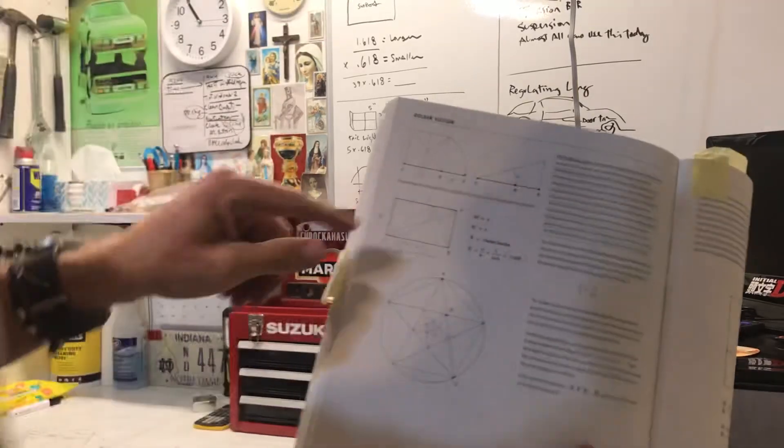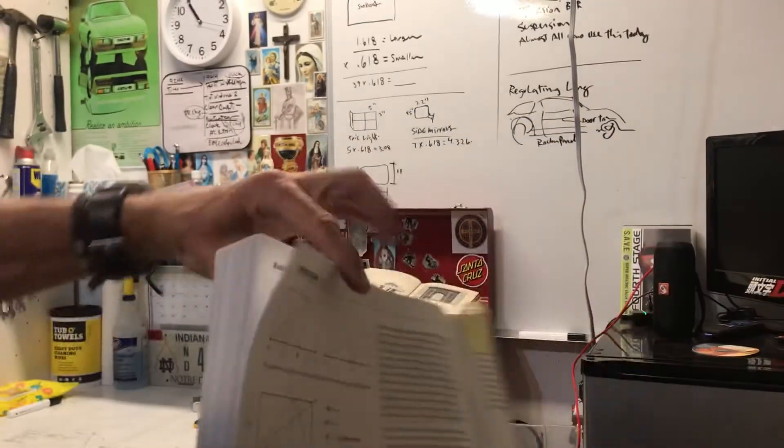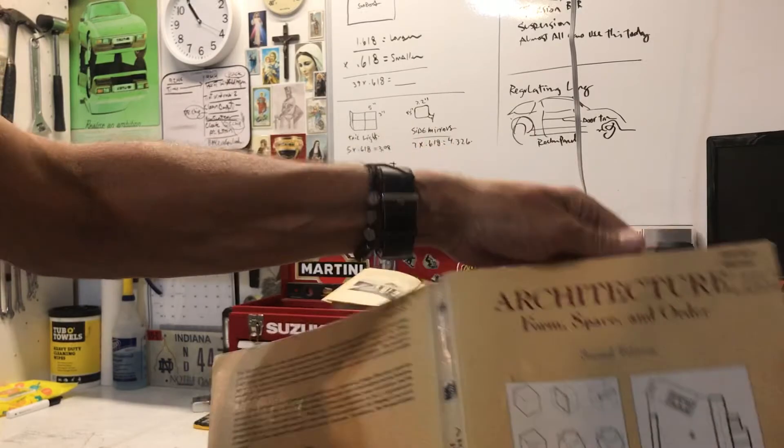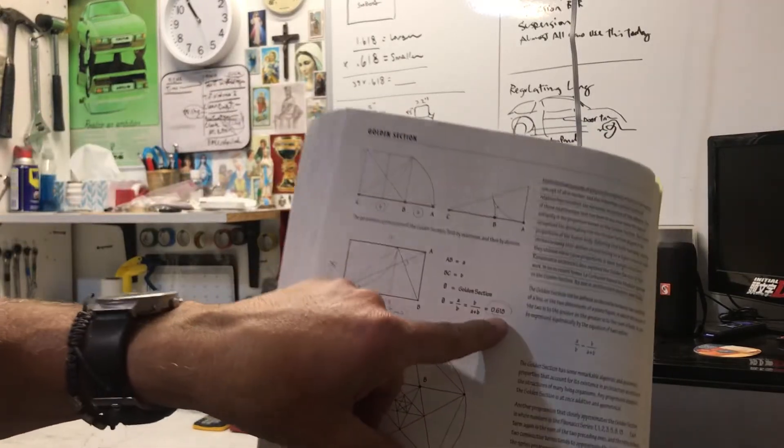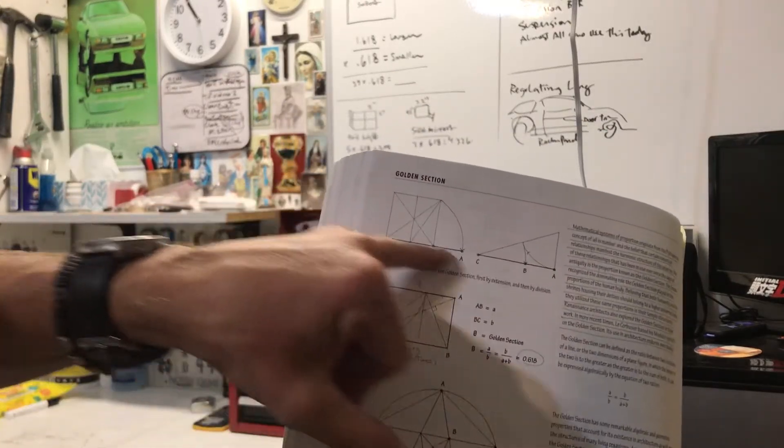And I'll show you it right here. You can actually see a golden section. This is a design book that I use sometimes in my classes, Architecture, Form, Space, in order from Francis Ching, one of the authorities in the design world. So, 0.618 here. But if you notice, there's a rectangle.